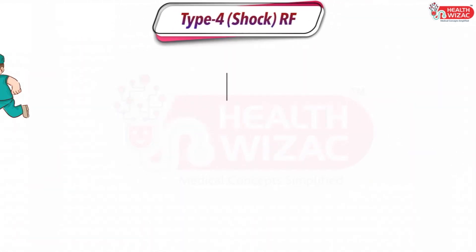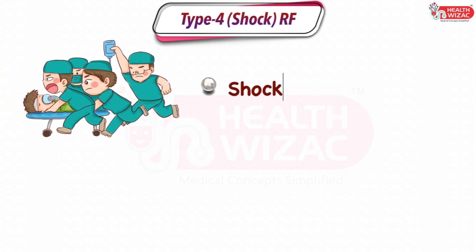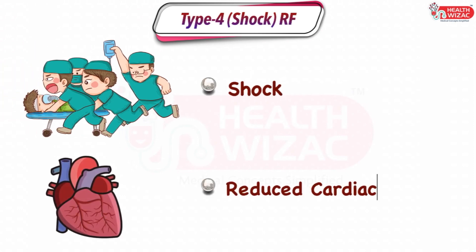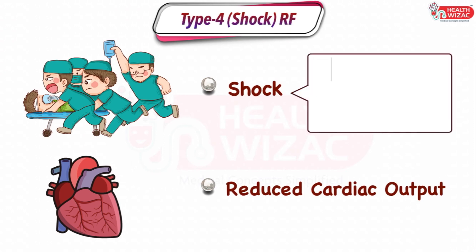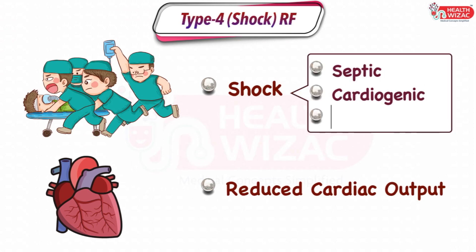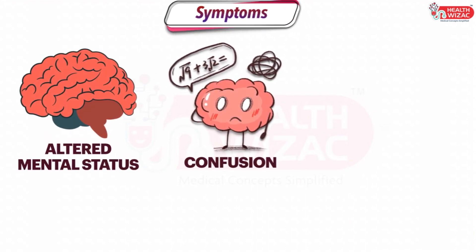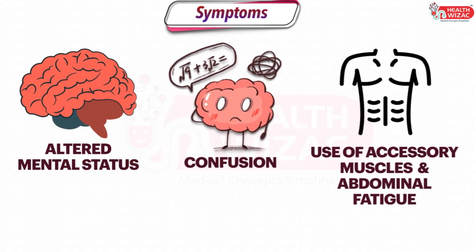Last is Type 4 respiratory failure, or shock or reduced cardiac output-induced respiratory failure. It usually arises due to septic, cardiogenic, or hypovolemic shock. Usual symptoms include altered mental status, confusion, use of accessory muscles, and abdominal fatigue.